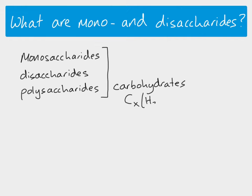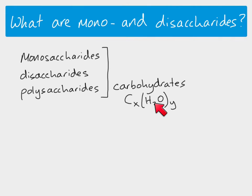Carbohydrates all have a general formula, which you can see here. Any carbohydrate will always have carbon, hydrogen, and oxygen atoms. But more importantly, the hydrogen and the oxygen will always be in a ratio of two hydrogens to every one oxygen. They won't necessarily be joined together — it's not lots of water molecules — but the hydrogen atoms in any carbohydrate will always be twice as many as oxygen atoms. And that's where the 'hydrate' part of carbohydrate comes from — the hydrate refers to water.